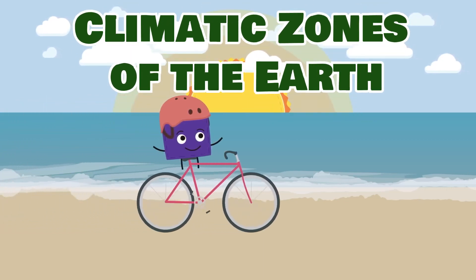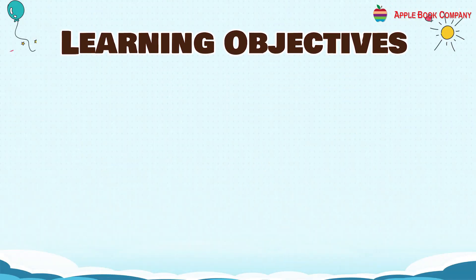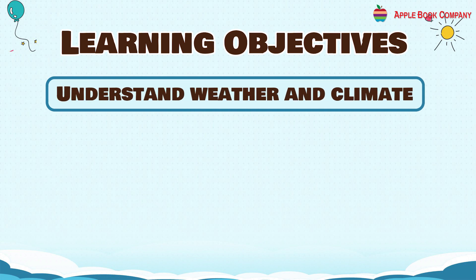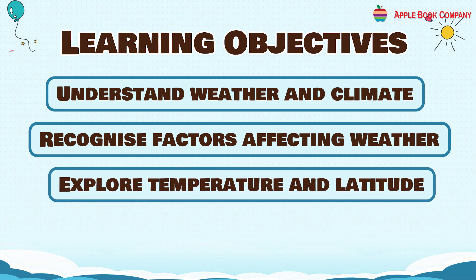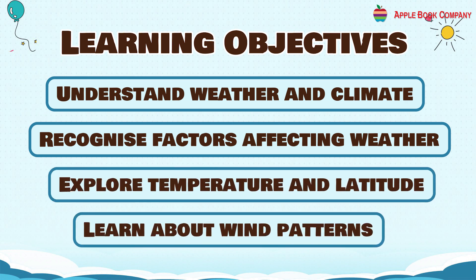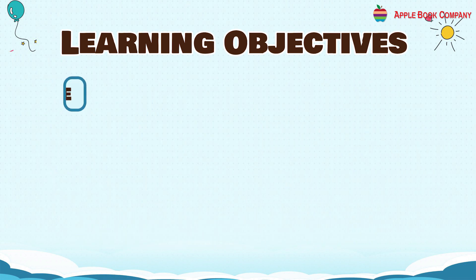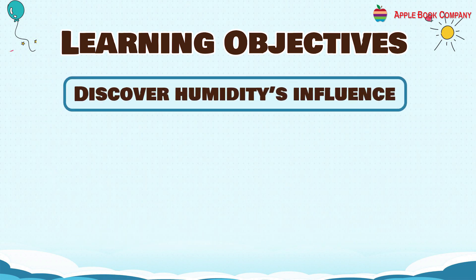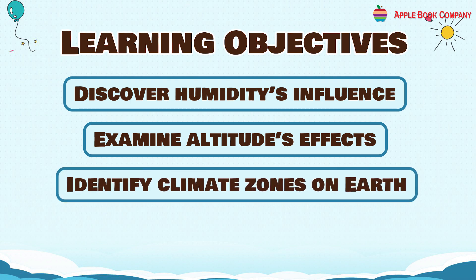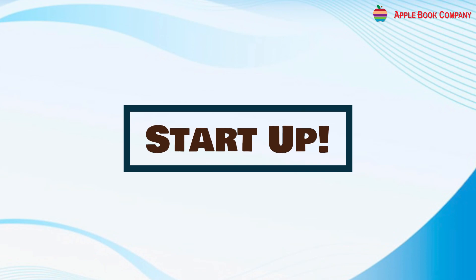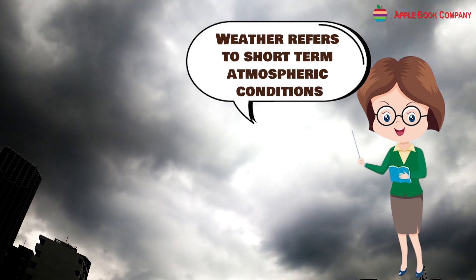Climatic Zones of the Earth. Learning Objectives: Understand Weather and Climate, Recognize Factors Affecting Weather, Explore Temperature and Latitude, Learn about Wind Patterns, Discover Humidity's Influence, Examine Altitude's Effects, and Identify Climate Zones on Earth.